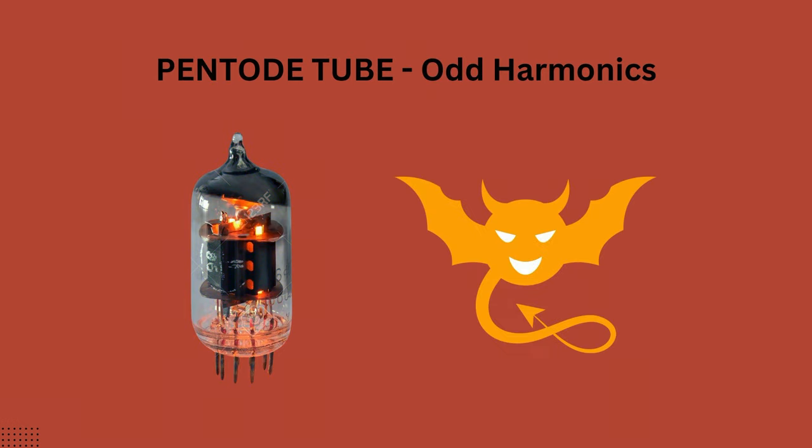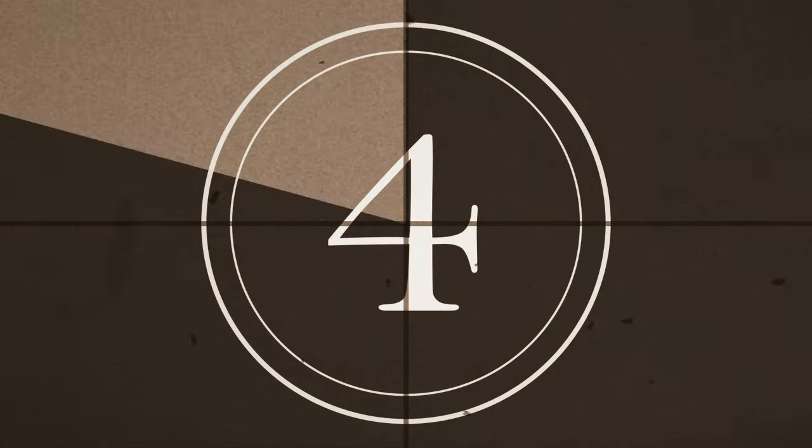On the other hand, if you want a less subtle saturation — more edgy and more obvious type of distortion — I would go for a pentode type tube, as they give more odd and third harmonic type saturation. And here's a classic example of a pentode tube being driven by an electric guitar.